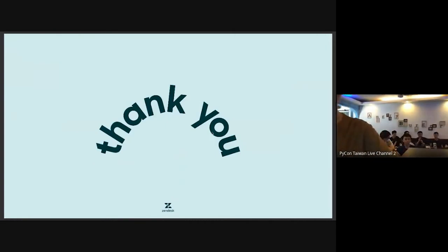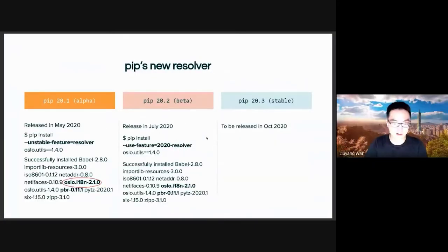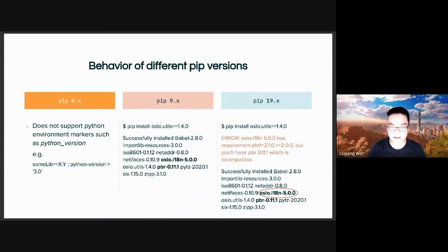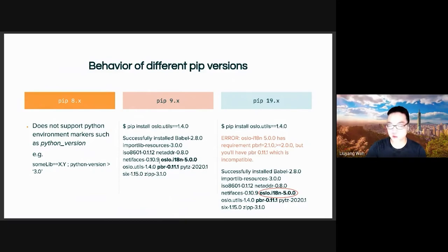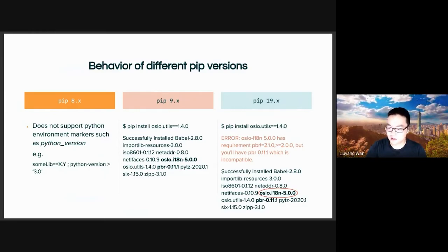Q: Could you explain a bit more about the wrong result with oslo.utils 1.4.0? A: This version is kind of a bad version because it depends on libraries that are mutually exclusive. So if you try to install this version using an older pip, you won't produce a working result. That's why you have to use a newer version of pip in order to get the correct versions.